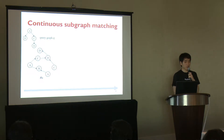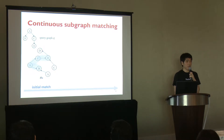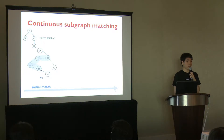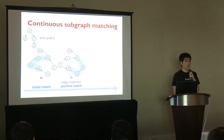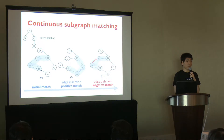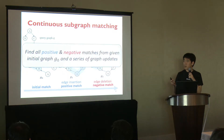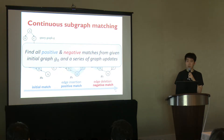When a query graph Q and an initial data graph G0 are given, subgraph matching can find initial matches that are the subgraphs of G0 matching the query graph Q. In our problem, continuous subgraph matching, a data graph is continuously updated. When an edge is inserted, some new matching results may emerge and we call these positive matches. When an edge is deleted, some existing results can be deleted and we call these negative matches. Continuous subgraph matching is the problem of finding all positive and negative matches from an initial data graph and a series of graph updates.